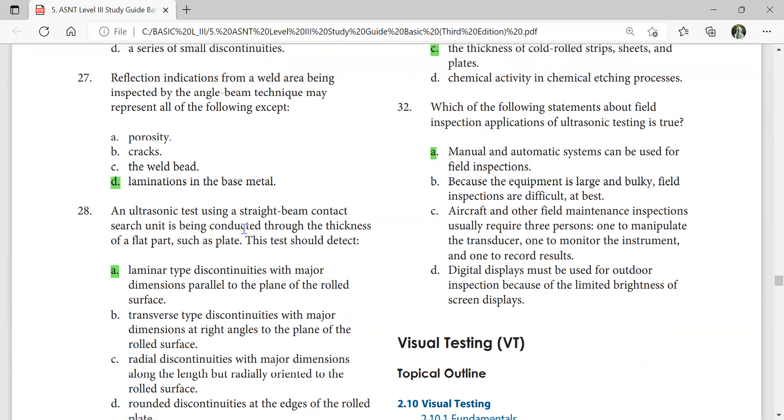Ultrasonic test using straight beam contact search unit is being conducted through the thickness of flat parts such as plate. The test should detect laminar type discontinuities with major dimension parallel to the plane of the rolled surface.